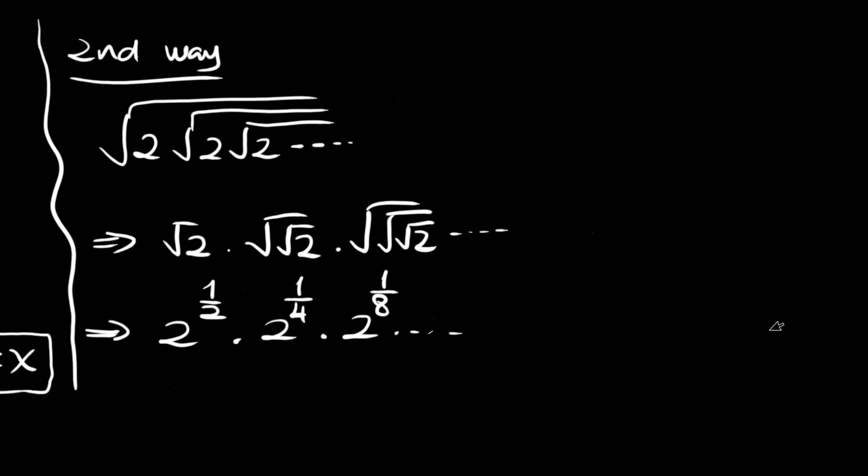Since the bases are equal, we can add the powers. Two to the power of one half plus one fourth plus one eighth and so on. And this exponent now is a geometric series.